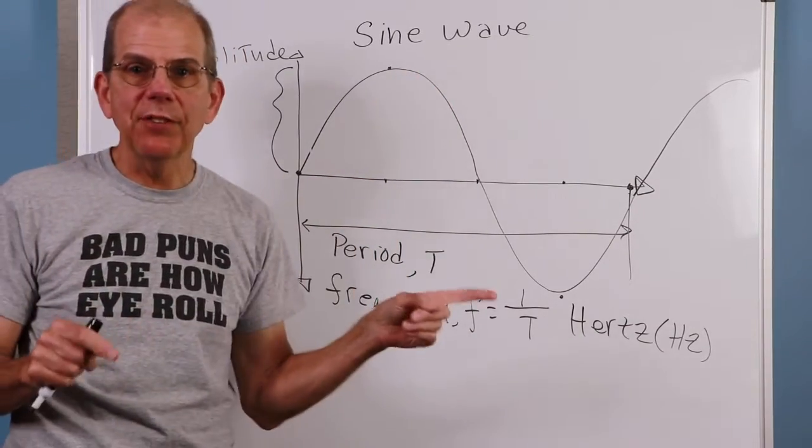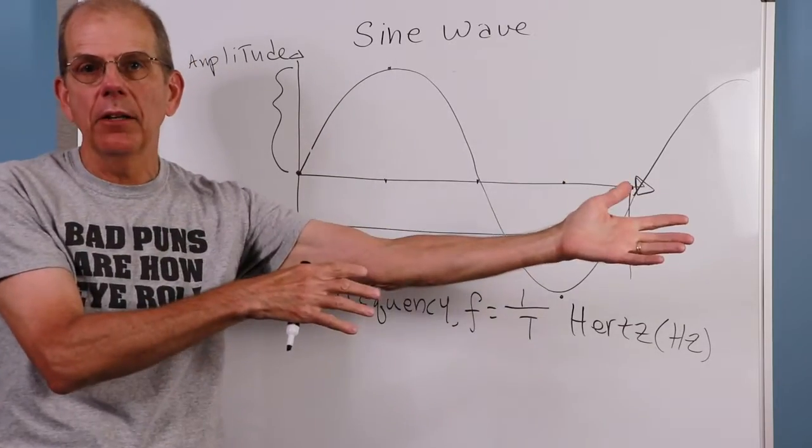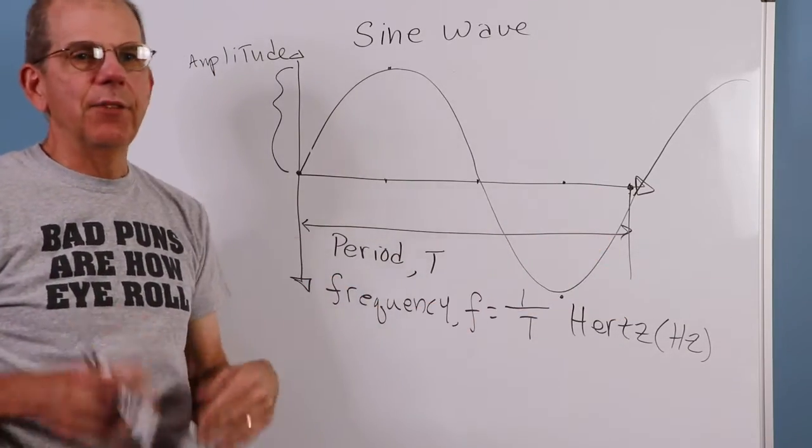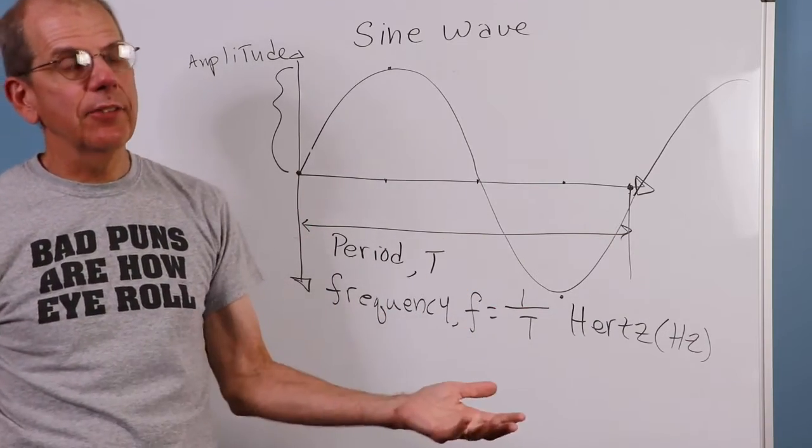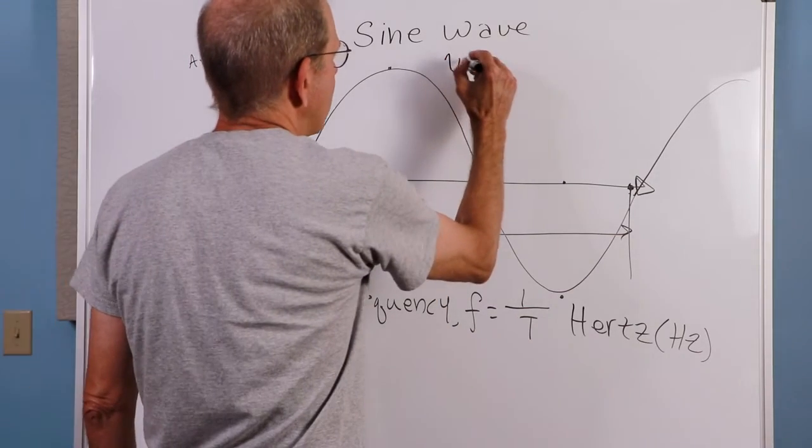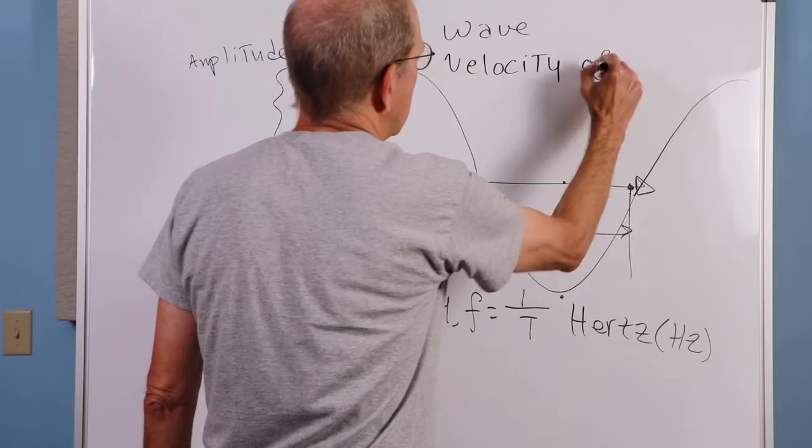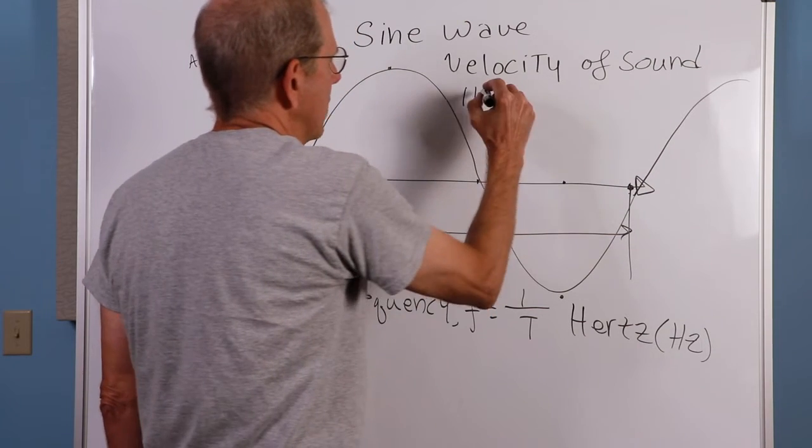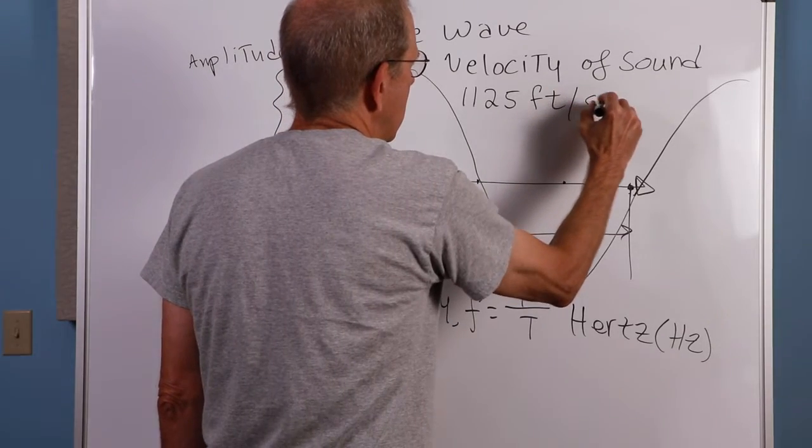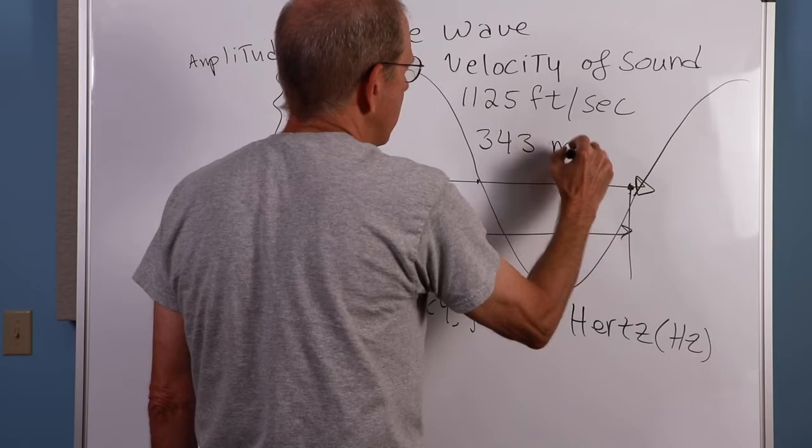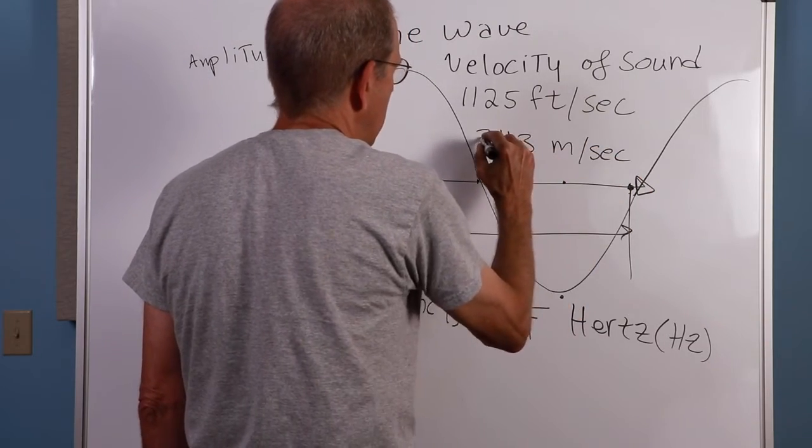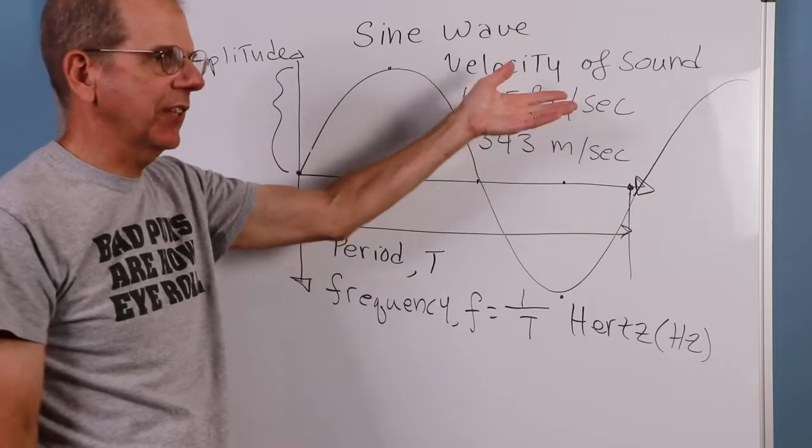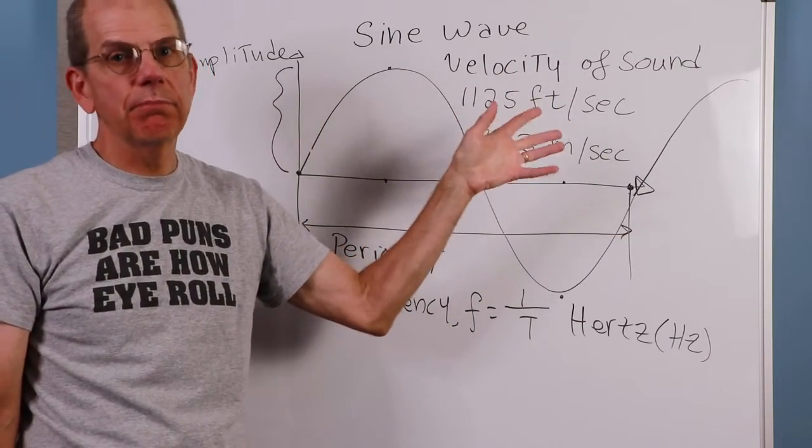Another thing we care about is the propagation velocity. How quickly is this stuff moving through, in this case, the air? Of course, sound can also travel through a bar of steel or something like that. It can travel through water. The velocity depends on what that material is. But for air, the velocity of sound in air, because primarily that's what we're going to be interested in, is in U.S. customary units is about 1125 feet per second. In metric, it's about 343 meters per second. That's relatively quick. If you want to put that in miles per hour, it's like 760 some odd miles per hour. It's pretty quick.